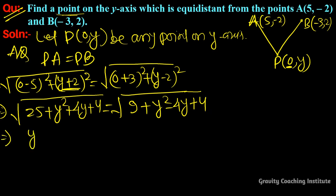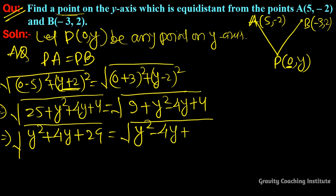So here we have √(y² + 4y + 29) = √(y² - 4y + 13). Squaring both sides to remove the square roots.